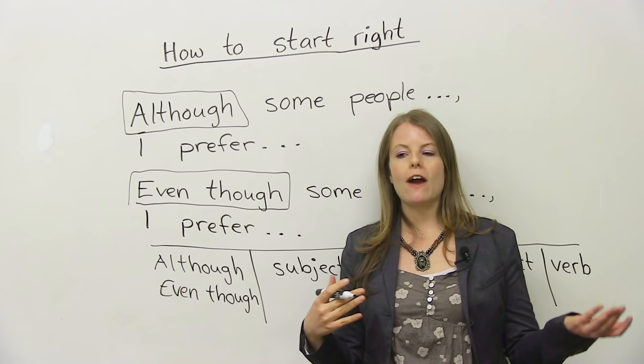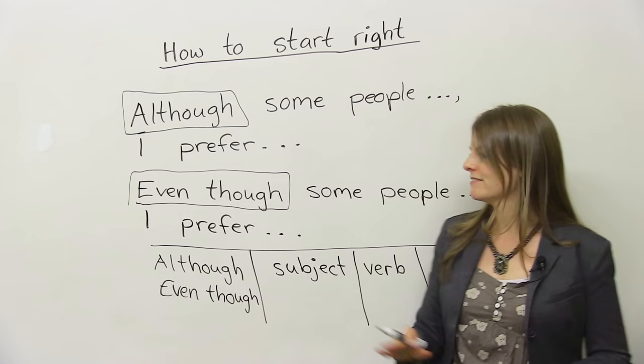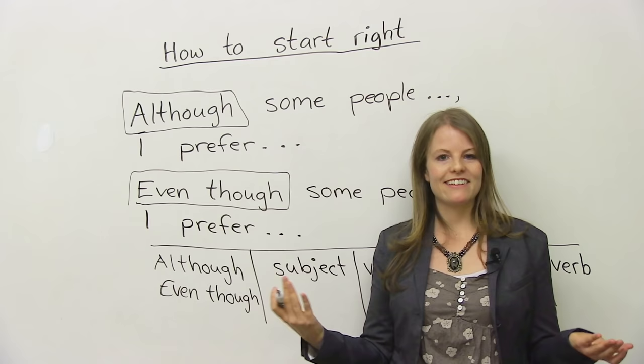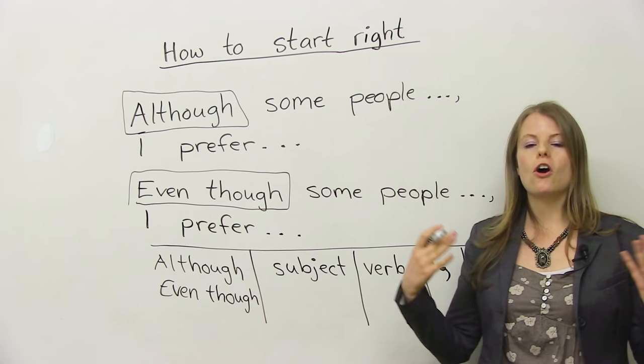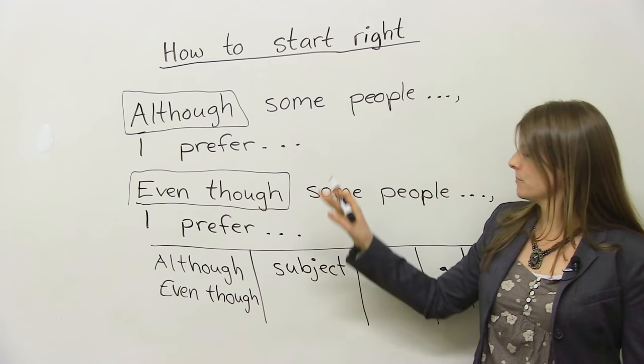If I ask you, would you rather go to a beach or go skiing? You can say, even though some people love going to beaches, I prefer skiing. Even though skiing is a lot of fun, I'd rather go to the beach. So again, you're offering the opposite idea first, and then your idea. Great for TOEFL and IELTS speaking. So let's look at these sentence structures a little bit closer.